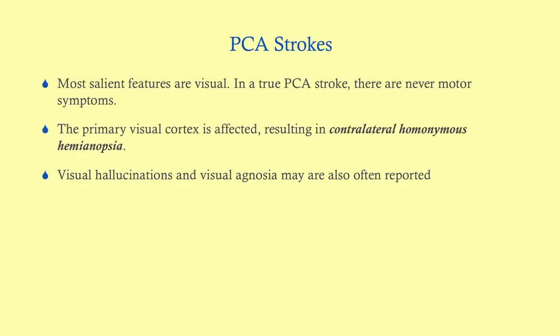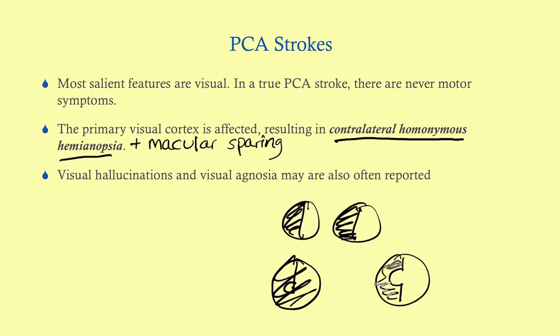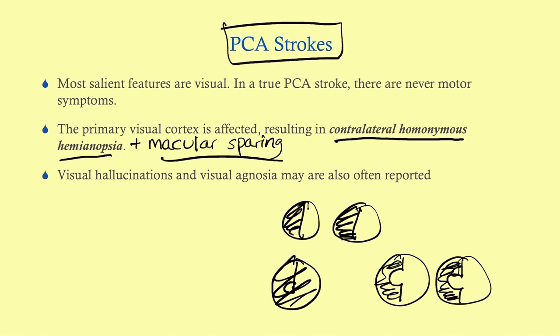A PCA stroke affects the visual cortex, so the most salient features are visual. Classically, this causes a contralateral homonymous hemianopsia with macular sparing — the central part of the visual field is preserved, but there is still the contralateral hemianopsia. Macular sparing is the classic test-question finding that tells you this is a PCA stroke. Patients can also get visual hallucinations and visual agnosia.